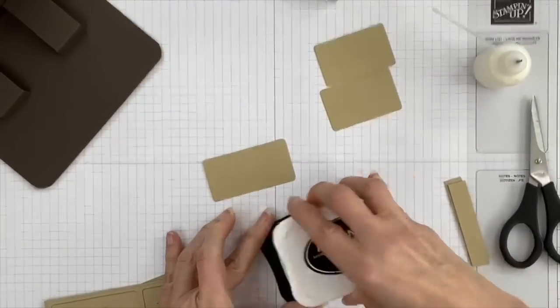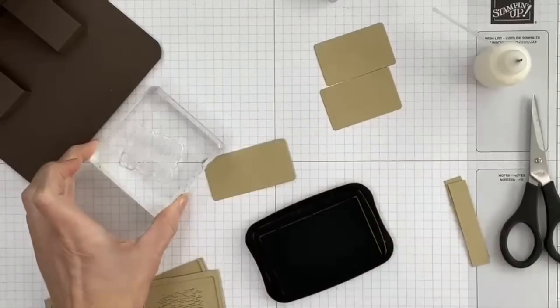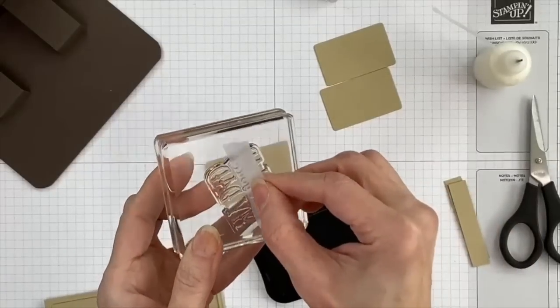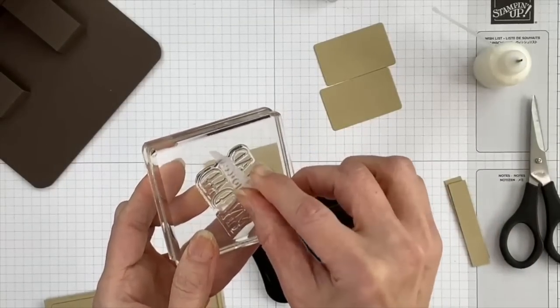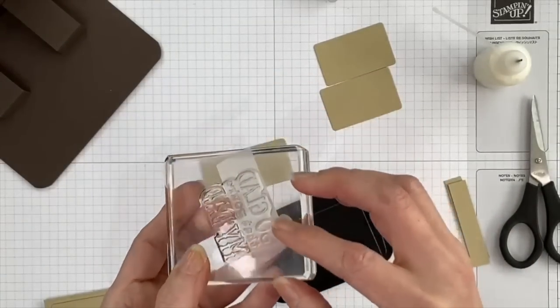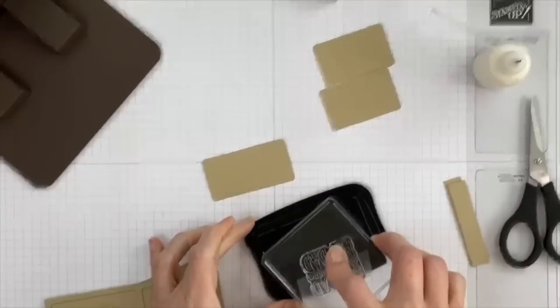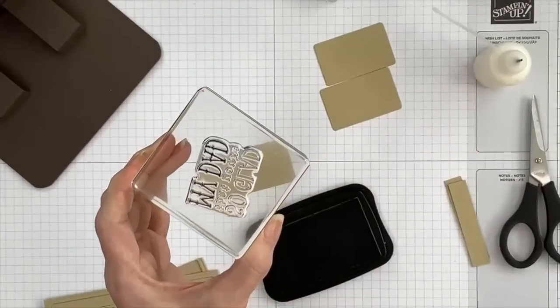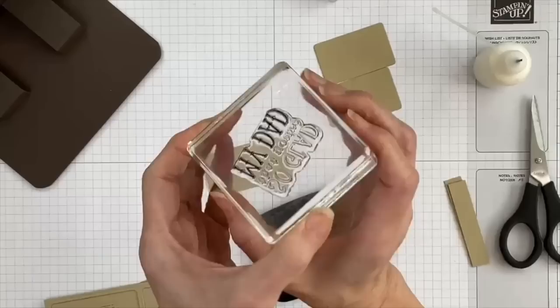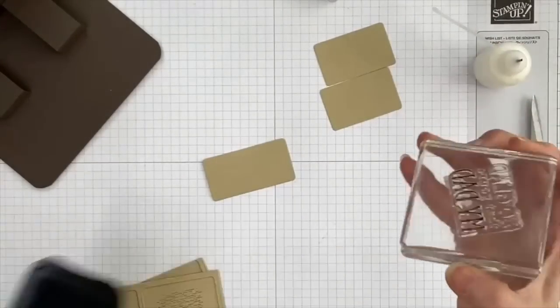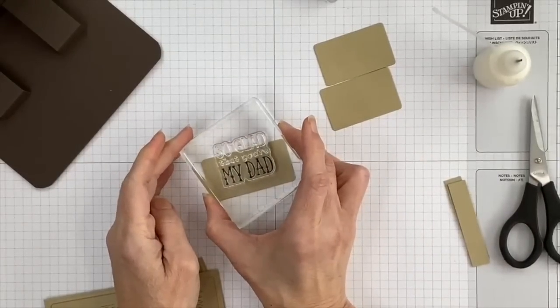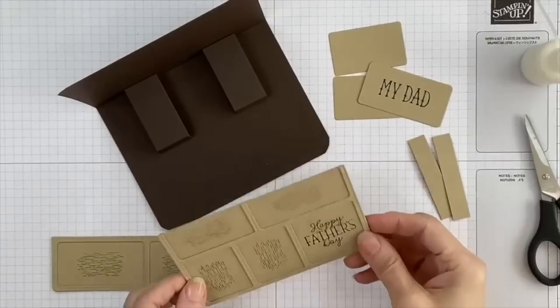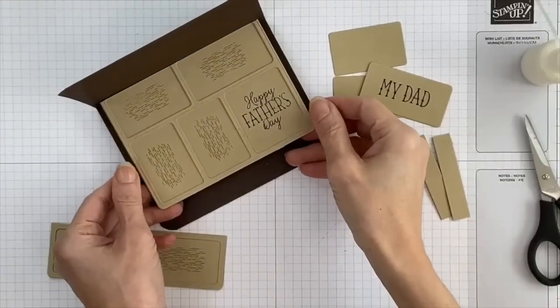We have one other image to stamp and that's the words My Dad. And we're going to stamp that onto the handle, the longest section right here. So we'll open up our Tuxedo Black again. And this time we're going to grab some tape and we're going to mask an area of the stamp that we do not want to have inked up. So we're covering it up initially, inking up our stamp, taking the tape off. And you can see we don't have any ink now on those words. And that's going to get stamped onto the center of this handle.